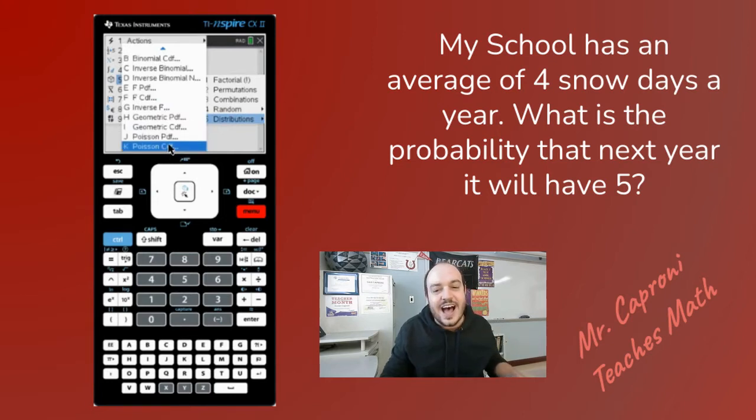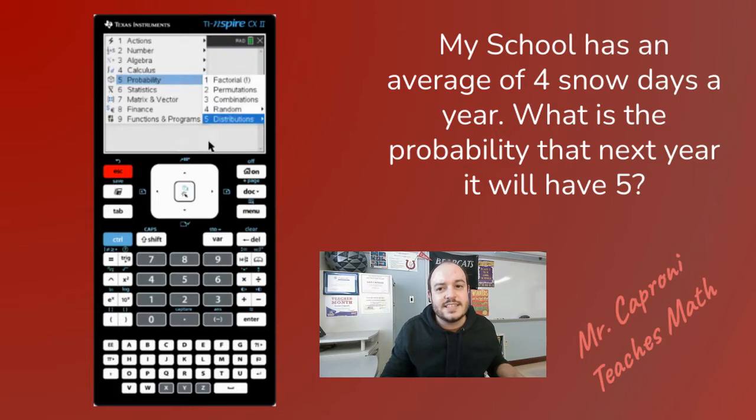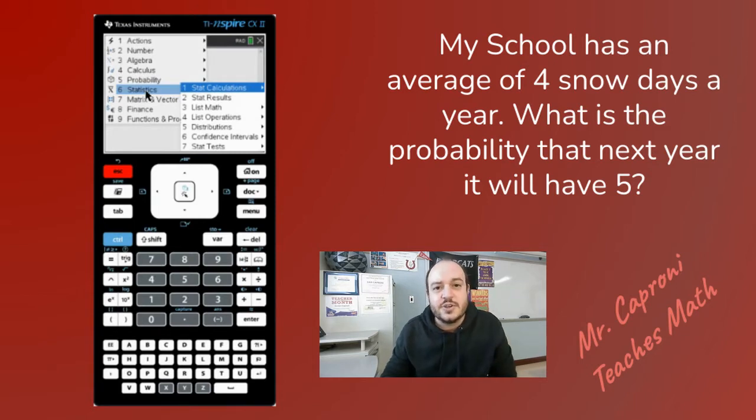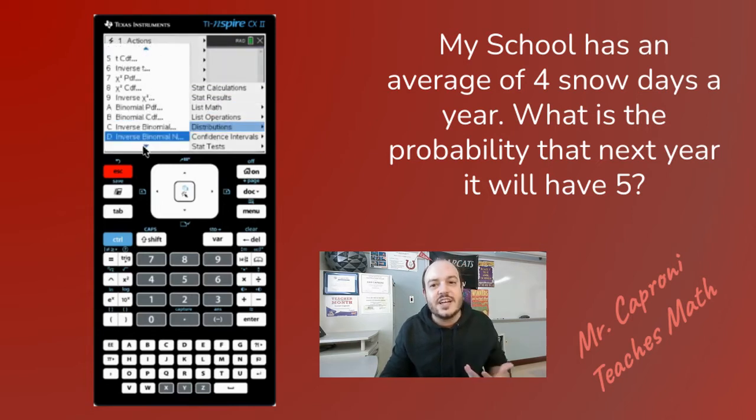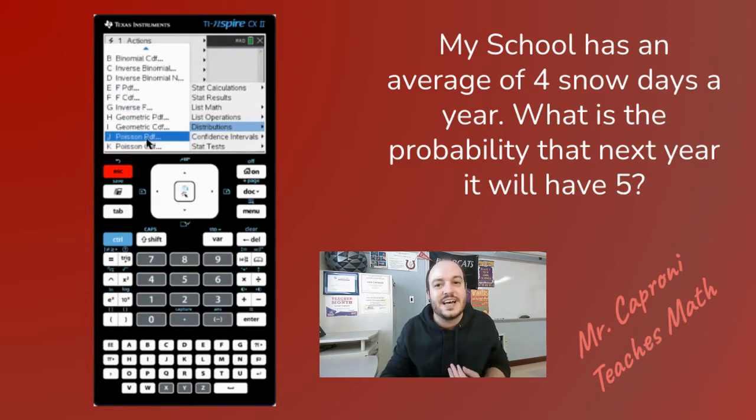Now if I did not want to go through this way, there is a second place that I can actually find this in our calculator, and that's through statistics. So you can go to probability or you can go to statistics at that first menu, and you'll notice that distributions is listed here as well. Just the same, we can go down to the very bottom and see Poisson PDF and CDF.